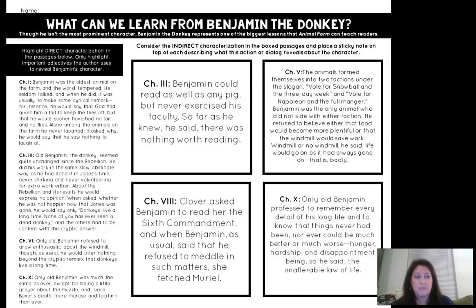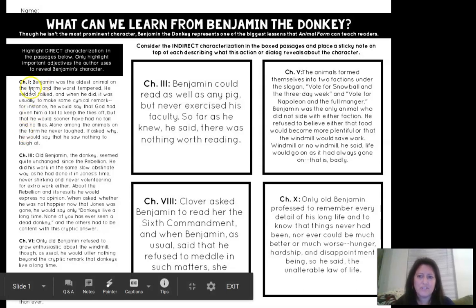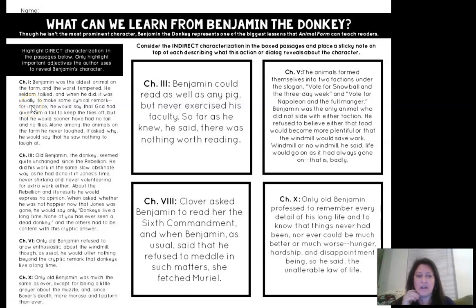Throughout the book, Orwell uses direct characterization to give us ideas and information about Benjamin — his thoughts, his opinion, and insight into his thinking process. Direct characterization means he directly tells us what Benjamin is thinking and directly describes his attitude and mindset. Take a look at this example here, Chapter 1, which you'll have on your Google Docs sheet.